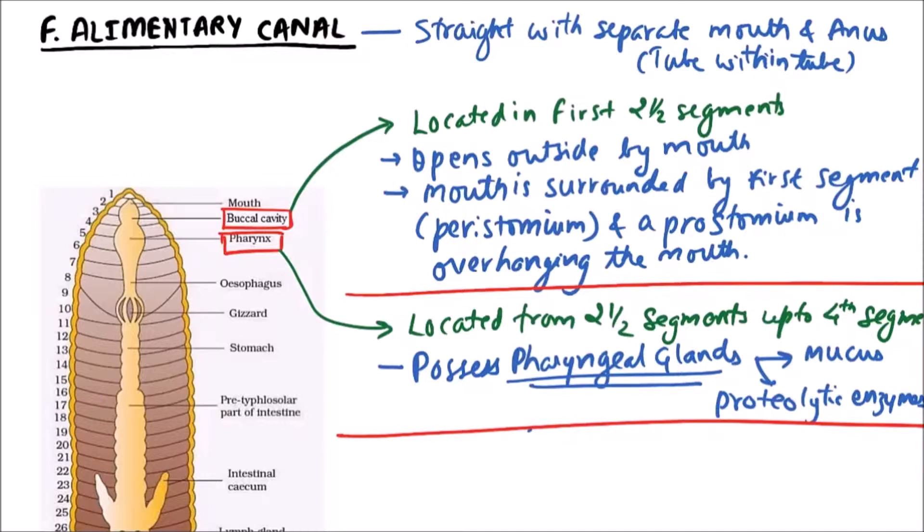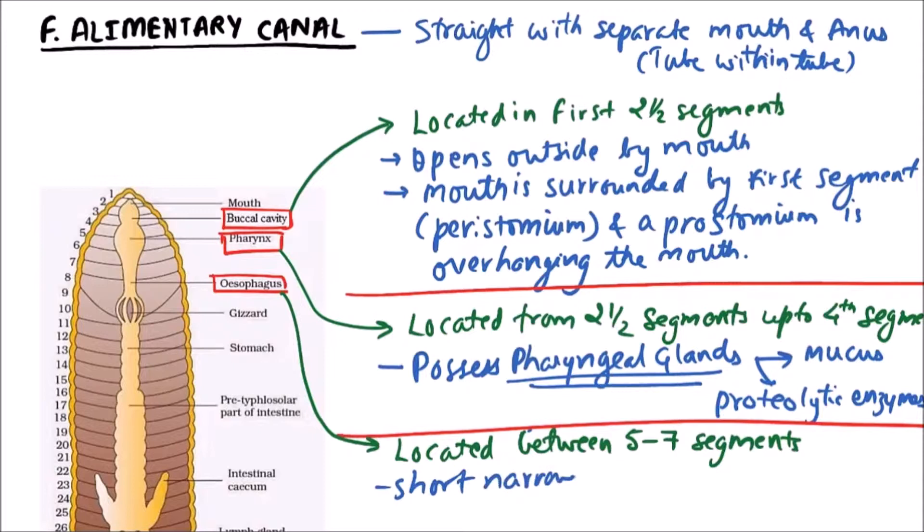Next is esophagus. Esophagus is located between five to seven segments. It is a short narrow tube-like structure.